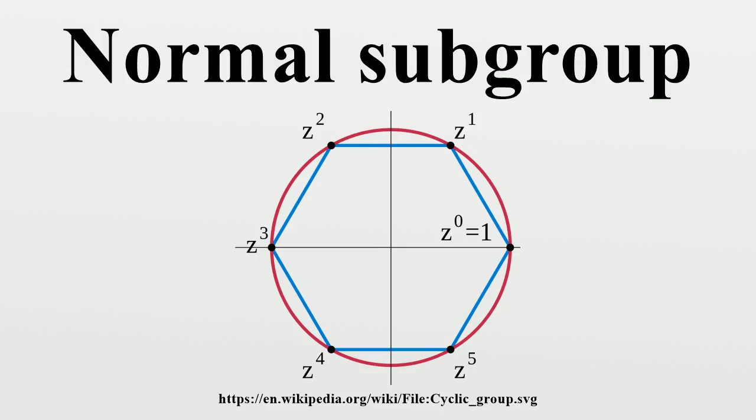Normal subgroups can be used to construct quotient groups from a given group. Évariste Galois was the first to realize the importance of the existence of normal subgroups.